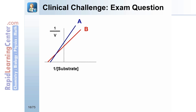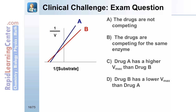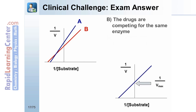The two lines on this graph represent the kinetics of two different drugs. What information correctly describes the graph? A. The drugs are not competing. B. The drugs are competing for the same enzyme. C. Drug A has a higher Vmax than drug B. D. Drug B has a lower Vmax than drug A. E. Neither drug is causing inhibition of the enzyme. The answer is B: the drugs are competing for the same enzyme. If the two lines of two different drugs cross each other, these two drugs are competing for the same enzyme. The higher a drug's Y-intercept, the lower its Vmax, which is why answers C and D are incorrect.